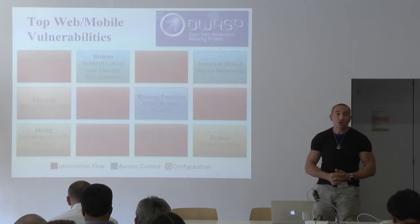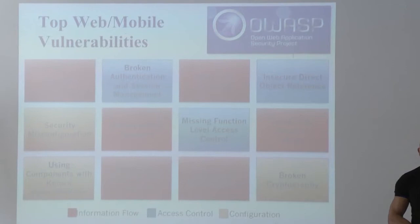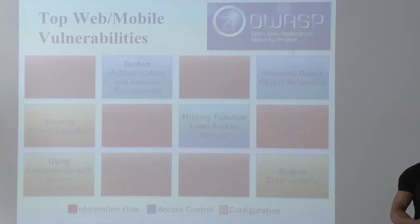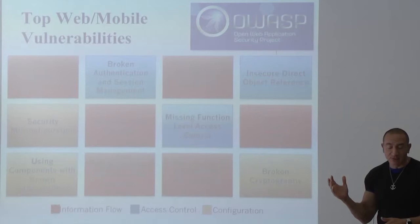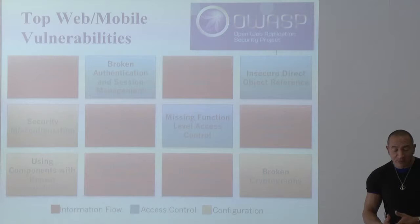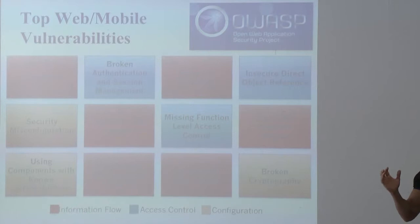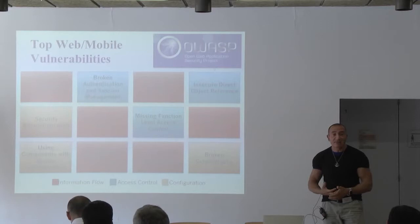There is a consortium of companies and academic institutions called OWASP, which stands for Open Web Application Security Projects. Every year, OWASP puts together a list of the top ten security vulnerabilities. In this case it's 12, because I merged vulnerabilities for web applications and mobile applications. I want to emphasize that these vulnerabilities can be grouped into three categories: information flow, access control, and configuration. The red ones are related to information flow, and those are the ones I'm going to discuss today.